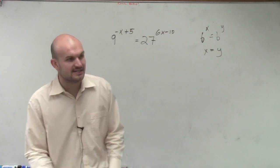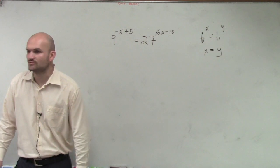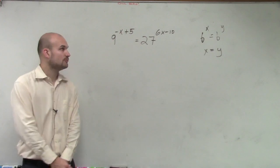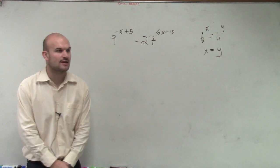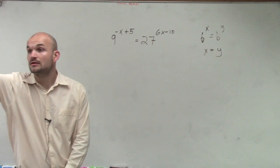So what we want to do is see, can we rewrite 9 and 27 with the same base raised to an exponent? Well, how could we rewrite 9? Could we write it as, how could we write 9 with a base and an exponent? We could rewrite it as 3 to the second.